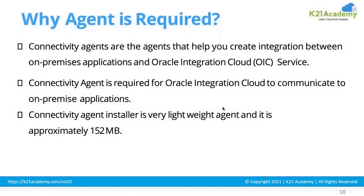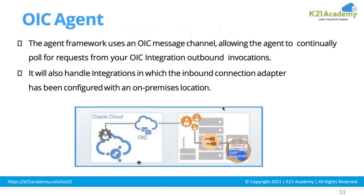Every communication between OIC and the on-premise application will go through via the agent — without it, communication is not possible. It is a very lightweight agent, approximately 152 MB as an installer. The agent framework uses an OIC message channel, allowing the agent to continually poll from your OIC integration for outbound invocations. Let me explain how communication actually happens between the agent and OIC.